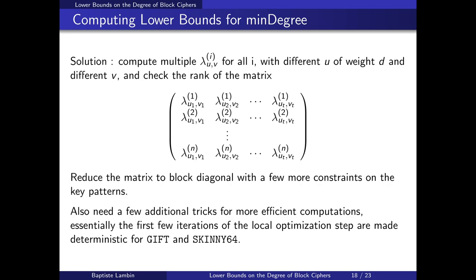We also proved lower bounds on the minimum degree. Without all technical details: if we want to show a lower bound on the minimum degree — the minimum degree of any linear combination of the output bits — we compute many values of lambda_{u,v,i}, put them into a matrix, and check that this matrix is full rank. This means we show that the monomials appearing in the ANF cannot cancel each other out. A few optimizations make this work: we can make this matrix block-diagonal with a few more constraints on the parity set over the key, plus some small tricks detailed in the full version of the paper on ePrint.